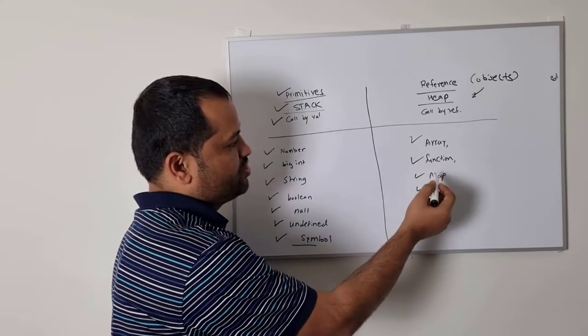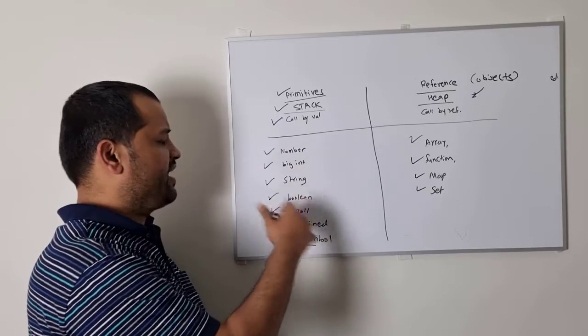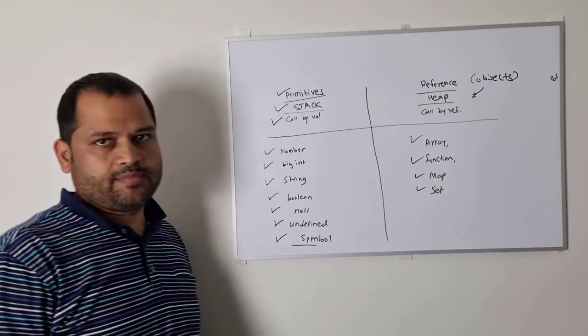In the reference types, we have array, function, map, set—basically all the objects that do not fall into the primitive categories can be considered as reference types.